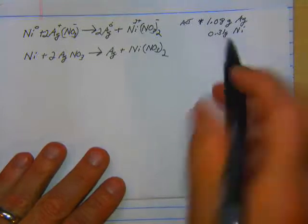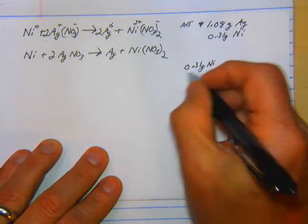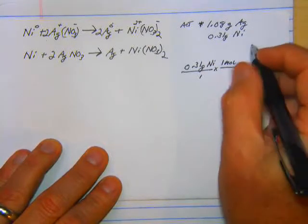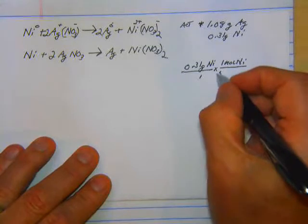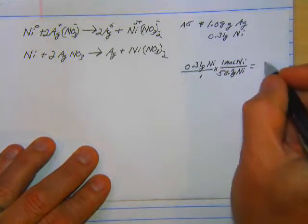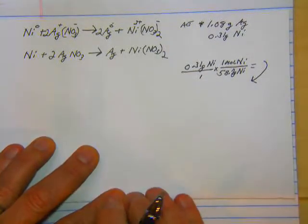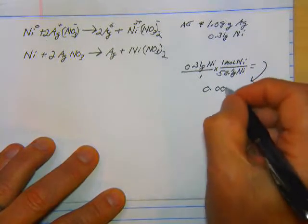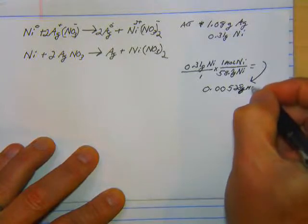We need to change nickel to moles. So 0.31 grams of nickel over 1 times 1 mole of nickel is 58.7 grams of nickel. And that equals a pretty small number. 0.00528 moles. Or excuse me, this should be moles, moles of nickel.